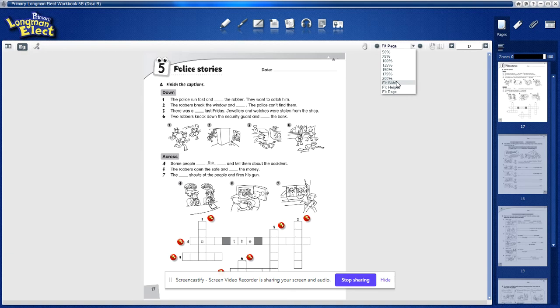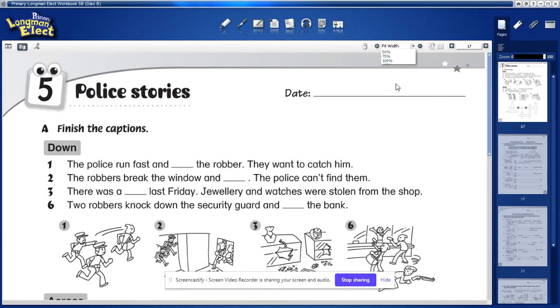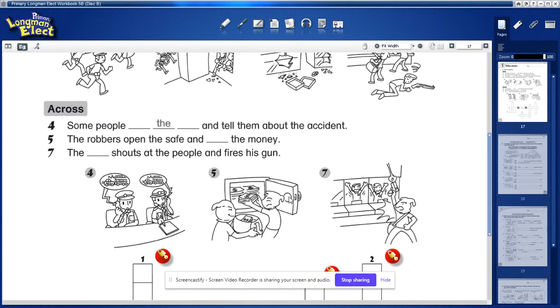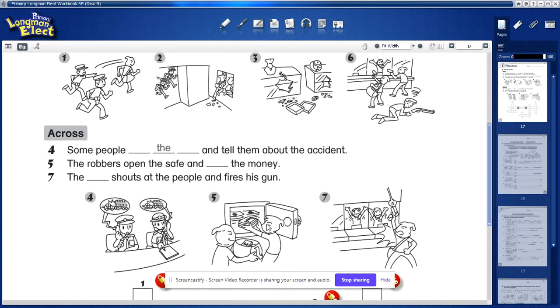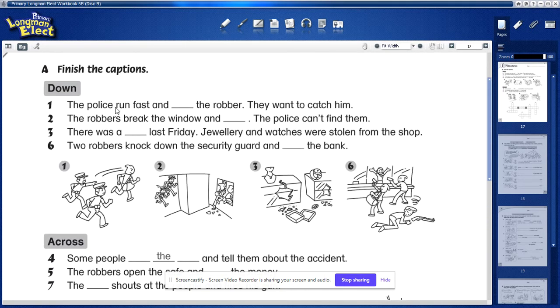Now we start with page 17. The first page is really easy, it's a crossword puzzle. What you have to do is read the sentence and find the right vocabulary, the correct word that fits into the blank. But you don't write on the blank, you write on the puzzle. It's kind of fun.